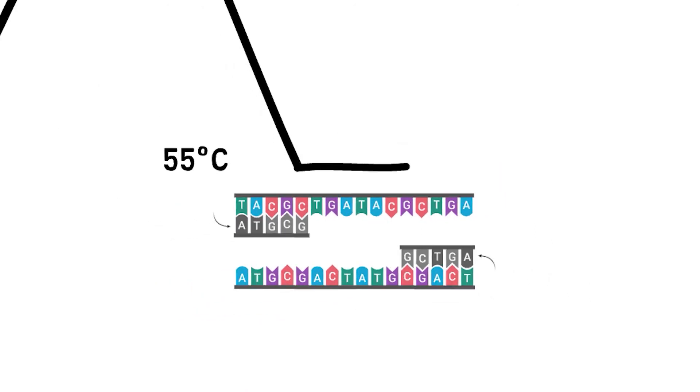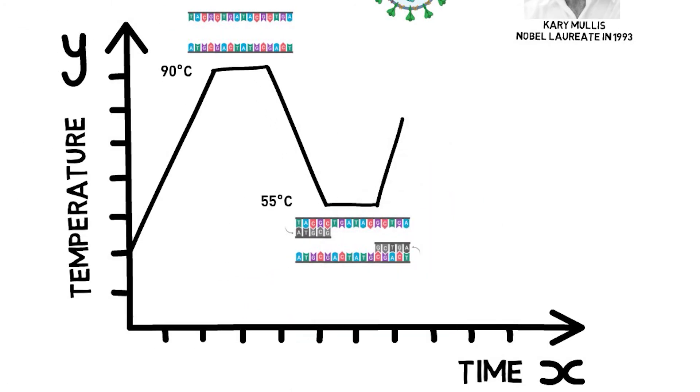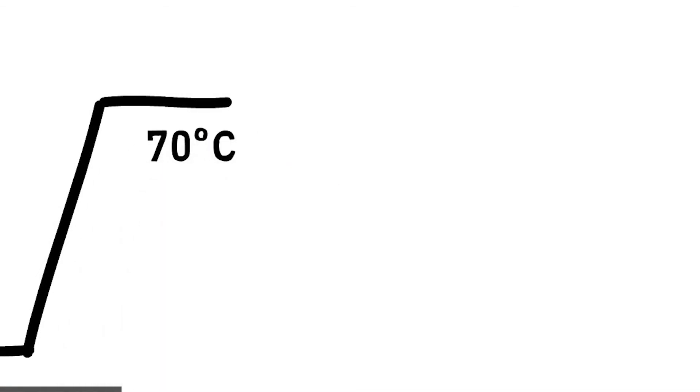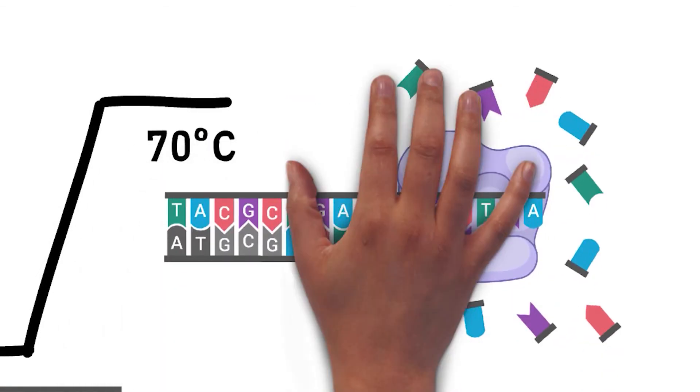Afterwards, the machine cools the reaction down to 55 degrees in order to favor the primers to pair up by complementarity. Then, temperature rises again to 70 degrees Celsius in order to stimulate the polymerase to scan and copy the segment, incorporating one nucleotide at a time.